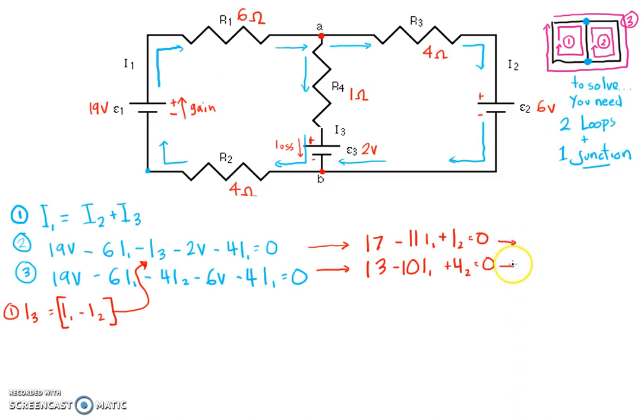So, what I ended up doing is I multiplied the top by 4. And I got 68 minus 44 I1 plus 4 I2 equals zero. And at the bottom, I got my 13 minus 10 I1 plus 4 I2 equals zero. And then all I got to do is add these two equations up. And I end up with 81 minus 54 I1 equals zero, which means I can solve for I1. And I end up getting 3 over 2 amps. So, there's my first current.